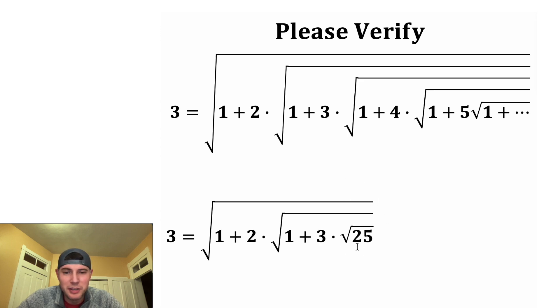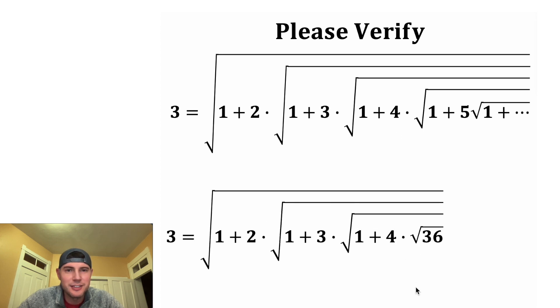Now we need another 1 plus. So this 25 will change into 1 plus 24. And then we'll factor out a 4. And then we'll rewrite this 6 as square root of 36. Then we need another 1 plus. So this will become 1 plus 35.